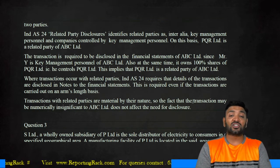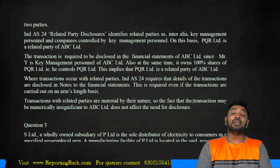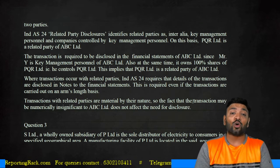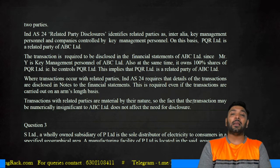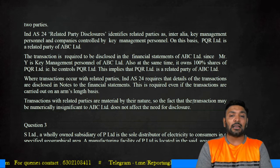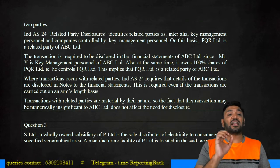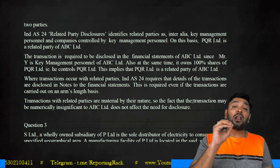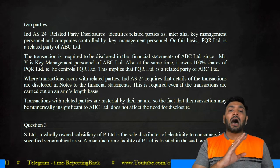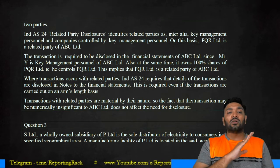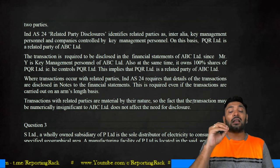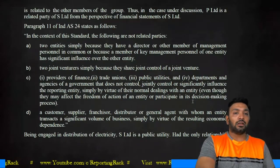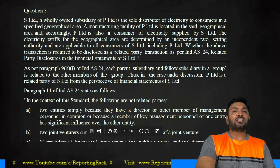The transaction is required to be disclosed in the financial statements of ABC Limited since Mr. Y is a KMP of ABC and owns 100% shares in PQR — meaning he controls PQR. Where transactions occur with related parties, India AS 24 requires details of transactions to be disclosed in notes to financials. This is required even if the transactions are carried out on arm's length basis. Transactions with related parties are material by their nature, so transaction volume may not be significant but still does not affect the need for disclosure.